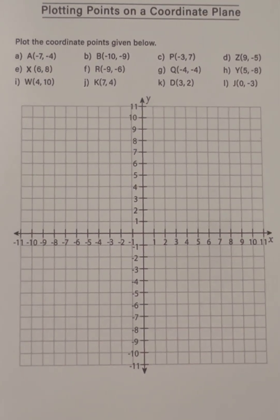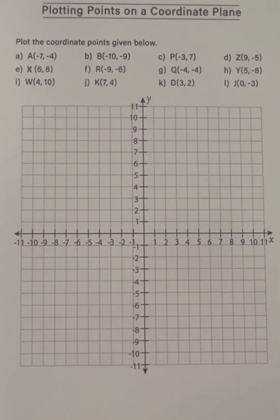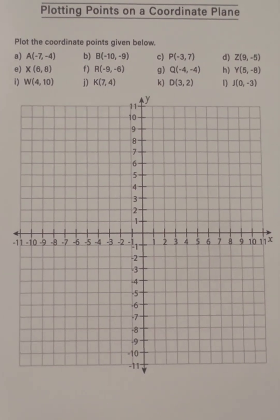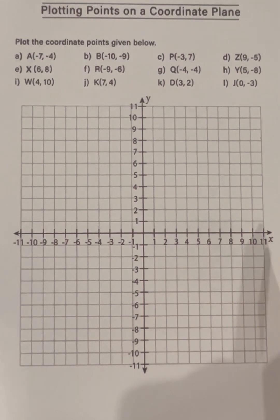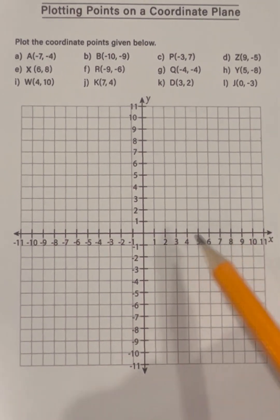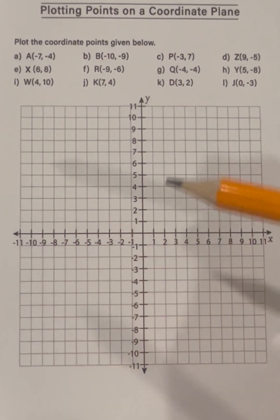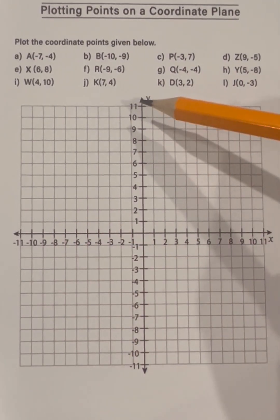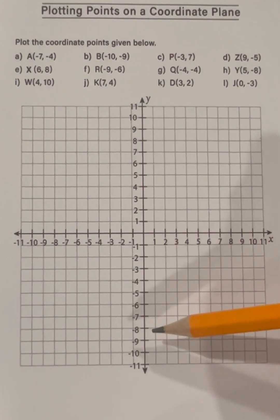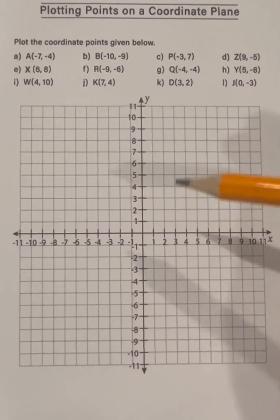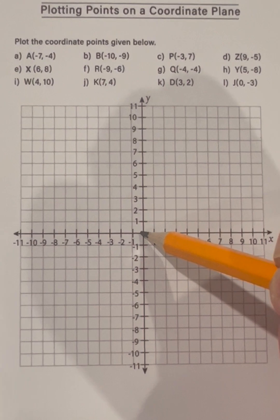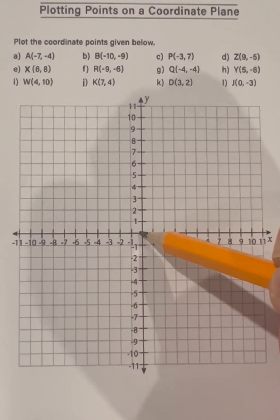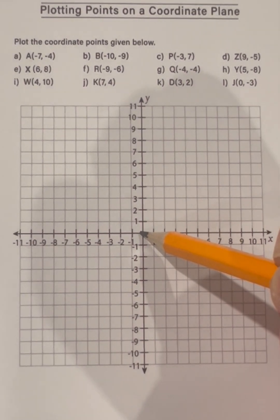A coordinate plane is a two-dimensional grid formed by two number lines. The x-axis, which goes from left to right, is called horizontal. And then the y-axis, which goes up and down, is called vertical. They intersect at the middle right here, which is zero,